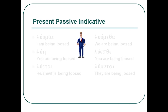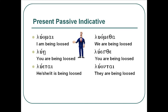The present passive indicative has exactly the same endings as the present middle indicative, but it's translated passively. So we have: luomai — 'I am being loosed'; luei — 'you are being loosed'; luetai — 'he/she/it is being loosed'; luometha — 'we are being loosed'; luesthe — 'you are being loosed'; and luontai — 'they are being loosed.' Notice how the action comes back onto the subject — these are passive forms where the action of the verb comes back onto the subject.